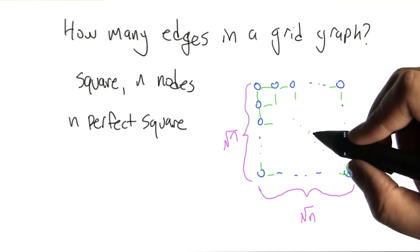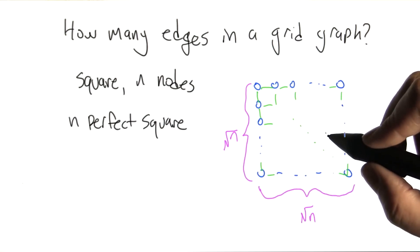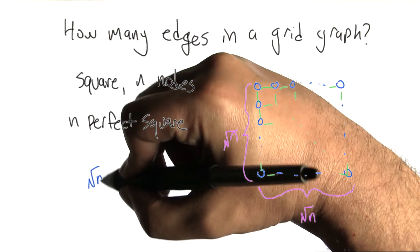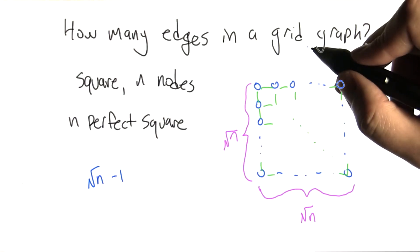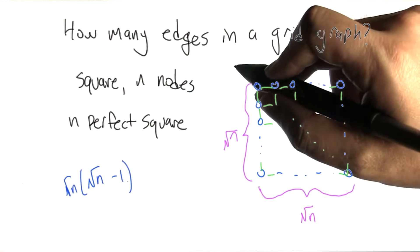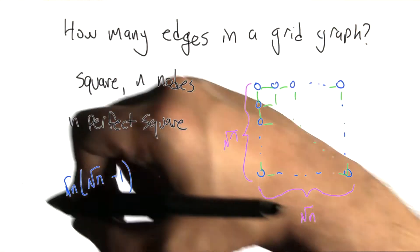Well, the same basic idea as we used last time applies. That is, the number of edges that go across in a chain here is going to be root n minus 1. And that's going to be repeated for each of these rows. And we're going to get the same kind of analysis for the edges that are going down.